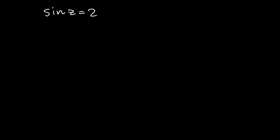Try and solve this complex trig equation before I do. The first thing I'm going to do in my solution is write sine of z in exponential form. So sine of z is equal to e to the power of iz minus e to the power of negative iz, all over 2i.